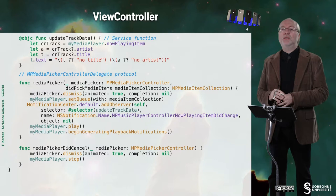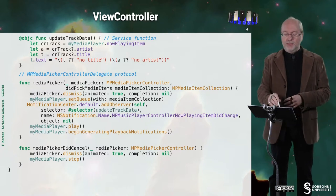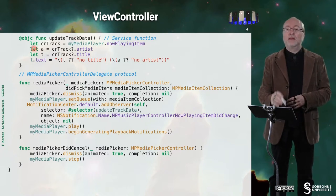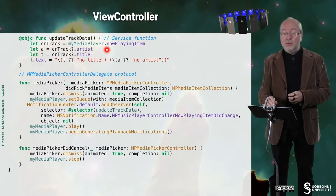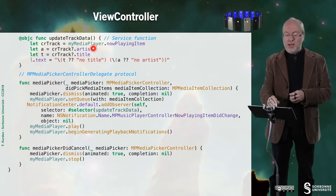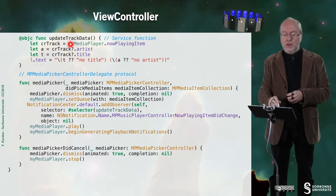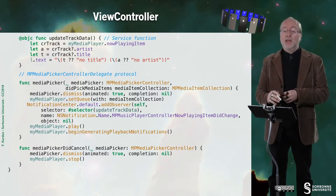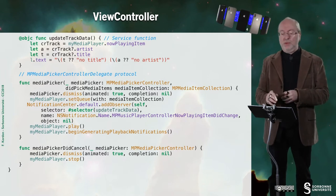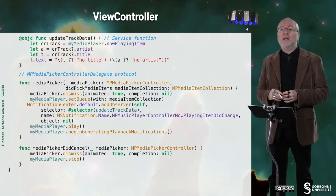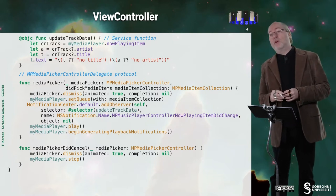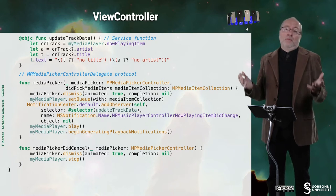Here I have a service function called UpdateTrackData. UpdateTrackData will just get the current track from the media player, check for the artist and for the title. Note that these are optional variables. I will just update the text, and this is the current way to deal with the fact that you can have a nil value for the title and for the artist. This function will be used in my handling of the MPMediaPickerControllerDelegate protocol.